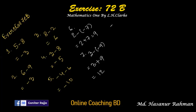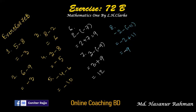Number 8 says minus 2 minus minus 11. Minus 2, and minus into minus is plus 11. If we subtract 2 from 11 that gives 9. The sign of the larger number is plus, so we keep a positive sign at the result.